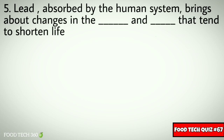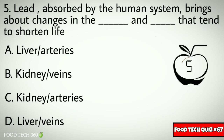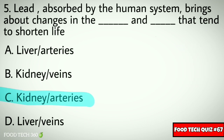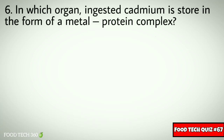Question number five: lead absorbed by the human system brings about changes in the dash and dash that tend to shorten life. Options: A) liver and arteries, B) kidney and veins, C) kidney and arteries, D) liver and veins. Correct answer: C) kidney and arteries.